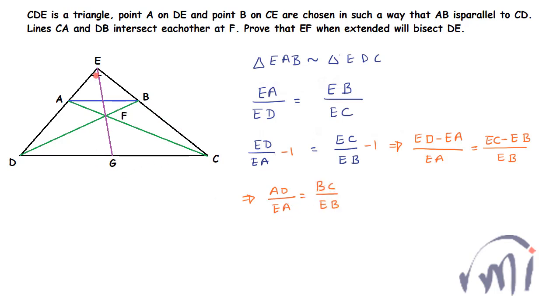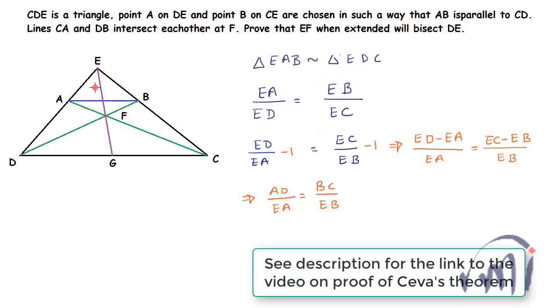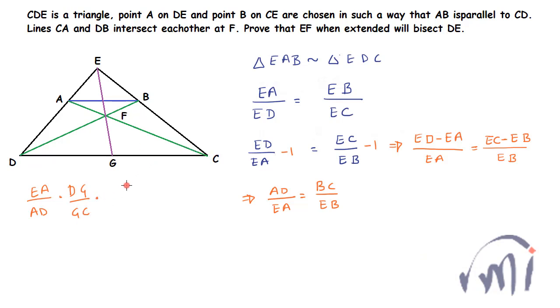And now here, these lines EG and DB and CA, they all pass through single point F. That means we can use Ceva's theorem. As per Ceva's theorem, EA divided by AD multiplied by DG divided by GC multiplied by CB divided by BE will be equal to 1. And CB divided by BE is actually equal to AD divided by EA.